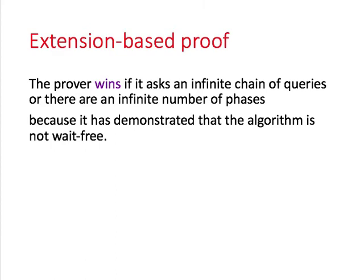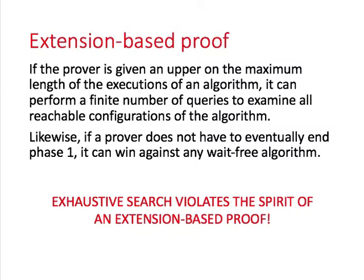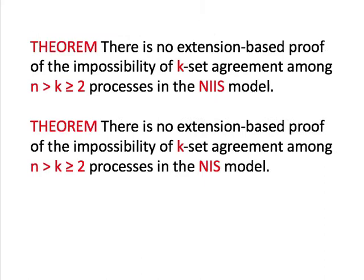If the prover asks an infinite chain of queries or there are an infinite number of phases, the prover has demonstrated that the algorithm is not wait-free. For example, a valency proof for the impossibility of consensus shows how to construct an infinite execution of any algorithm satisfying agreement and validity, demonstrating it is not wait-free. If the prover is given an upper bound on the maximum execution length, it could perform a finite number of queries to examine all reachable configurations — but exhaustive search violates the spirit of an extension-based proof, so this is not allowed. To prove that k-set agreement is unsolvable using an extension-based proof, a prover must win against every algorithm.